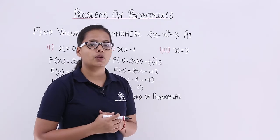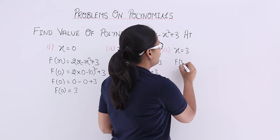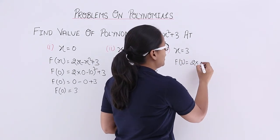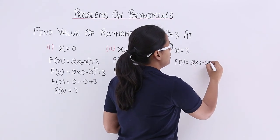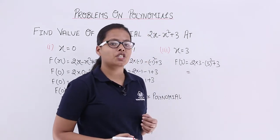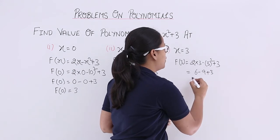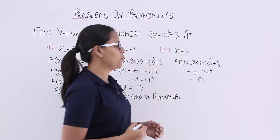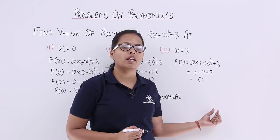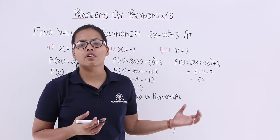Let's see for x = 3. We calculate f(3): putting the value in the right hand side, we get 2(3) - (3)² + 3. When you calculate this expression further you get 6 - 9 + 3, which is equal to 0. Again the value for this quadratic polynomial is becoming 0, so x = 3 is again a zero of this polynomial.